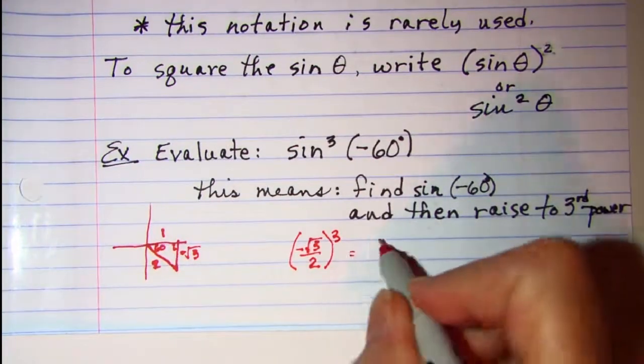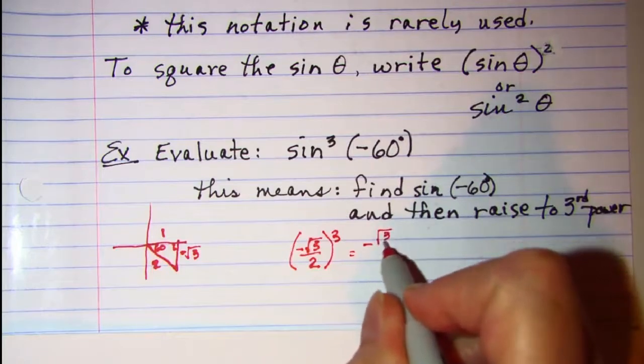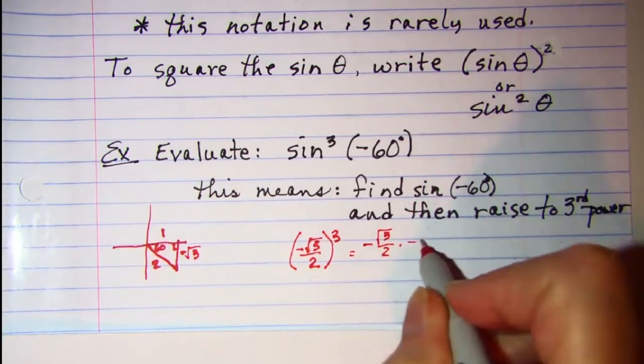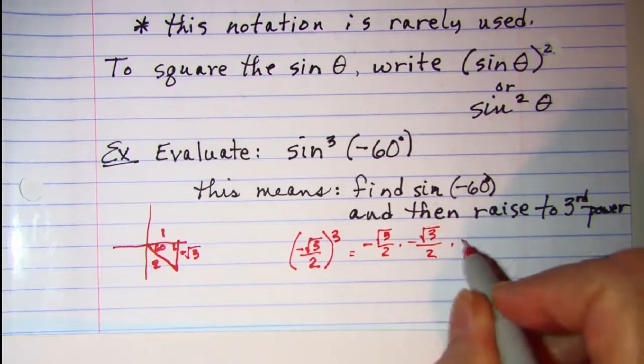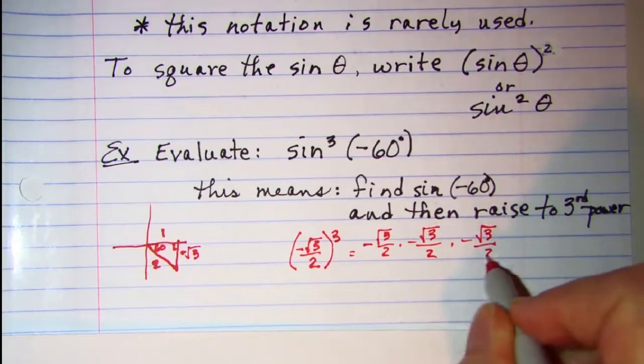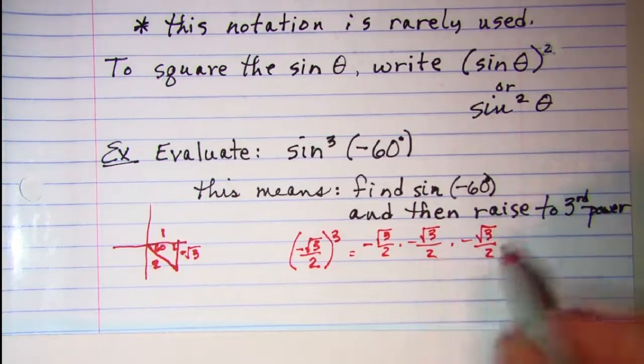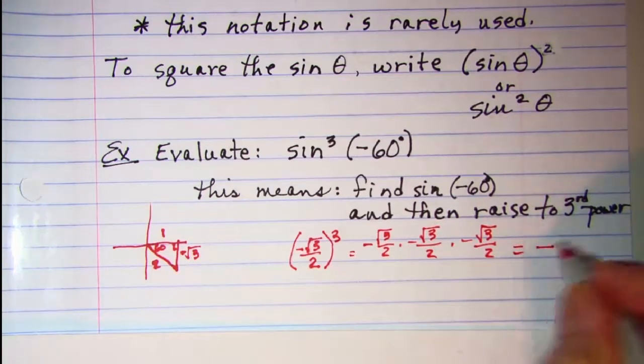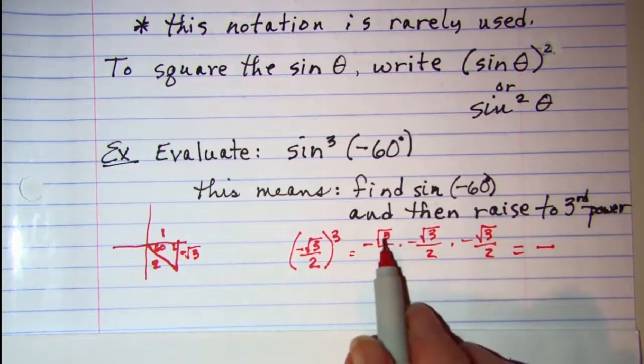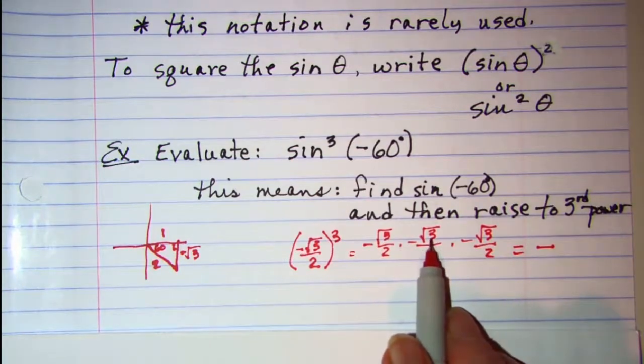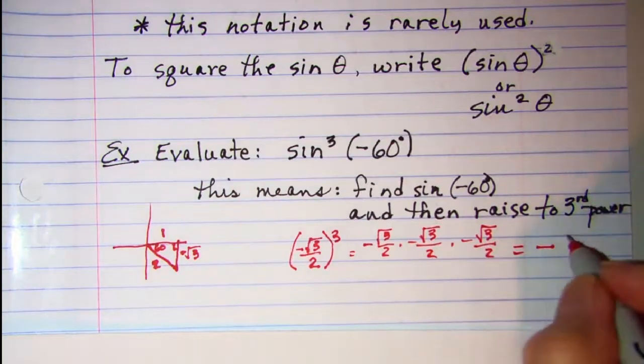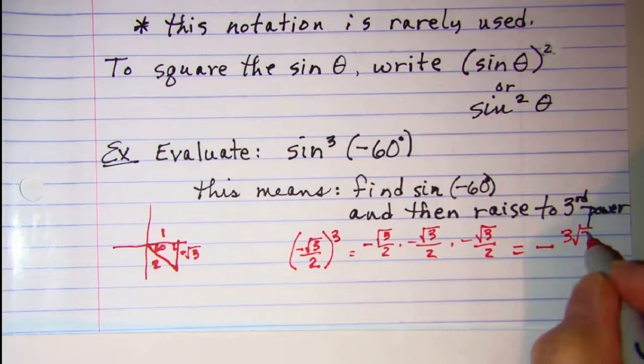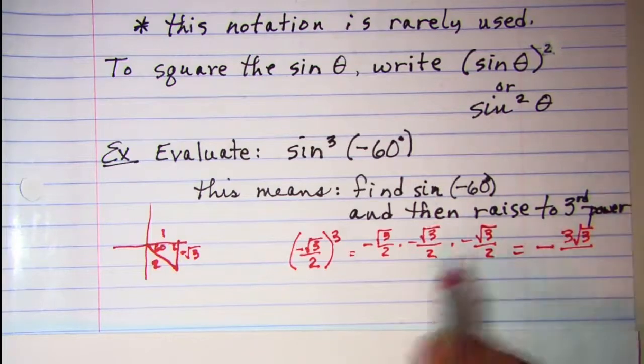This is the same as negative √3 over 2 times negative √3 over 2 times negative √3 over 2. So I have a negative answer, and then √3 times √3 is 3, and then I still have another radical. So that's 3√3 over 8, since 2³ is 8.